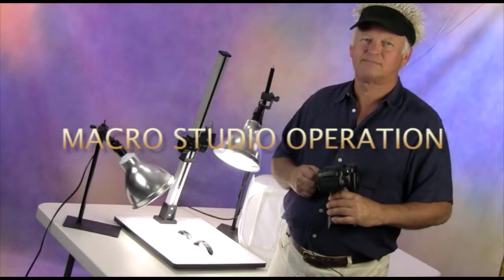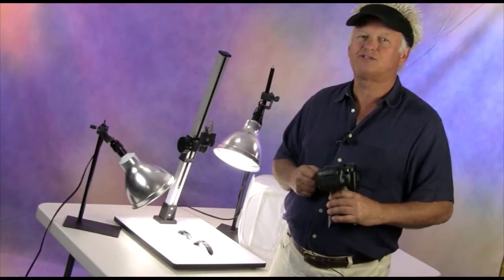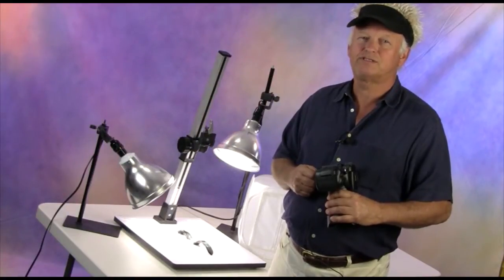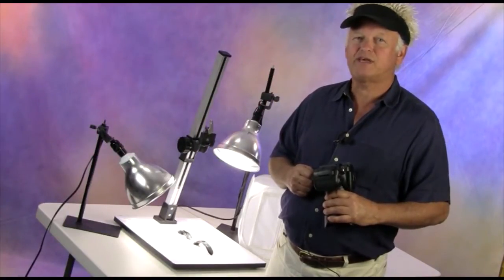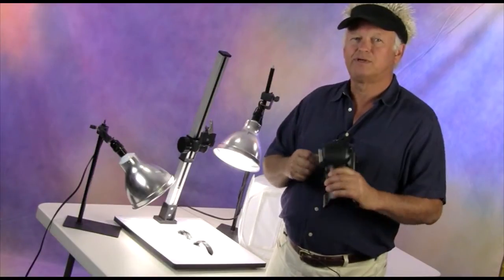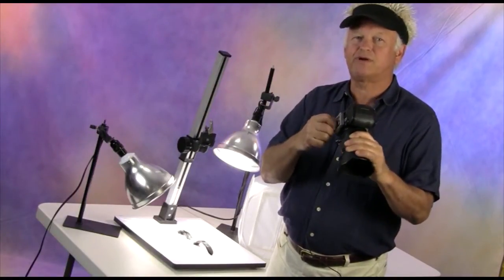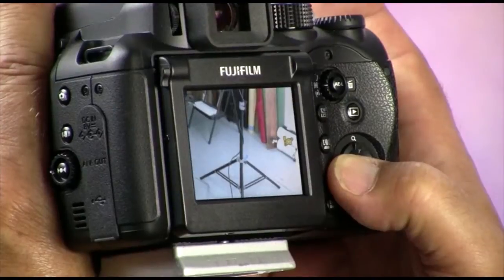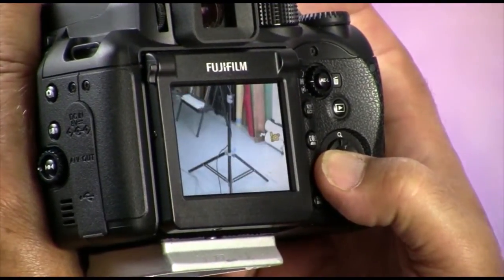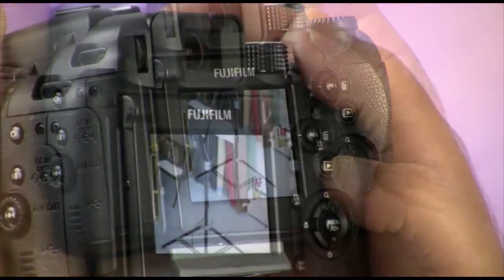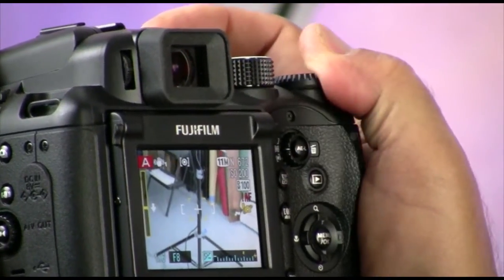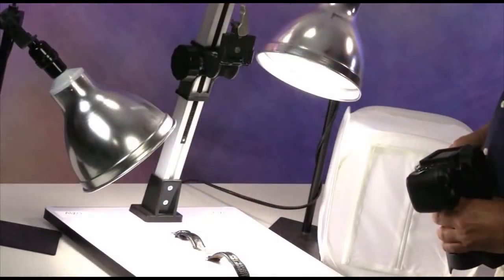The operation of the Alza 100 macro studio is simple. After the camera support and lights are assembled, you attach a quick release to the camera, set the camera to macro mode, set the aperture to f8 or higher, and lock